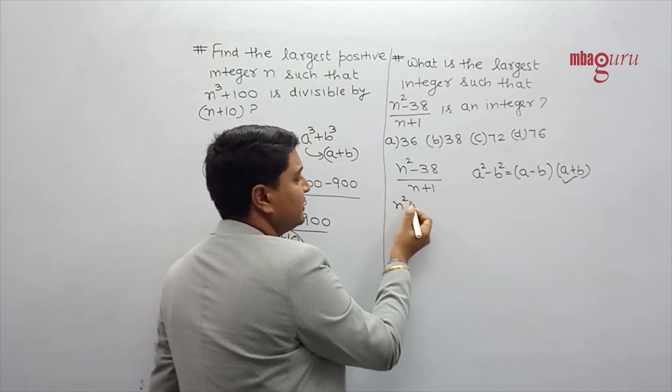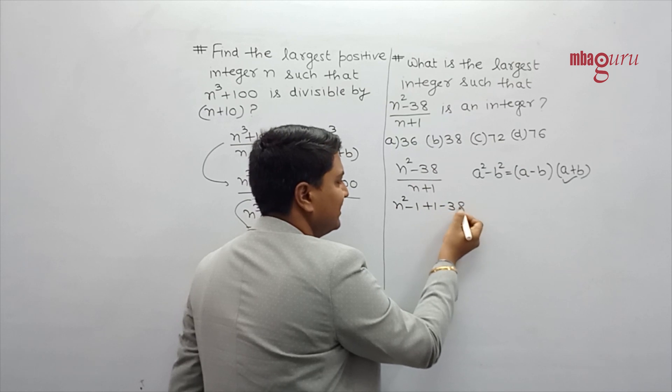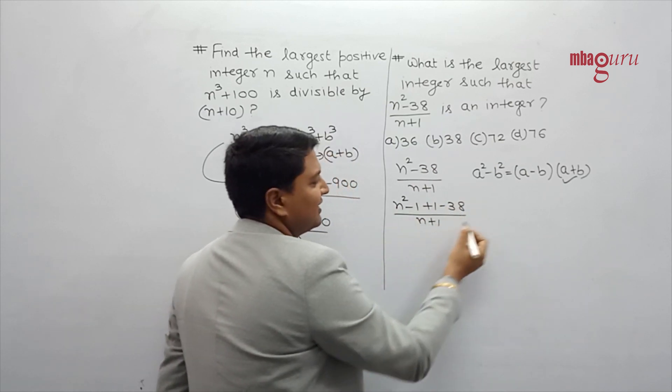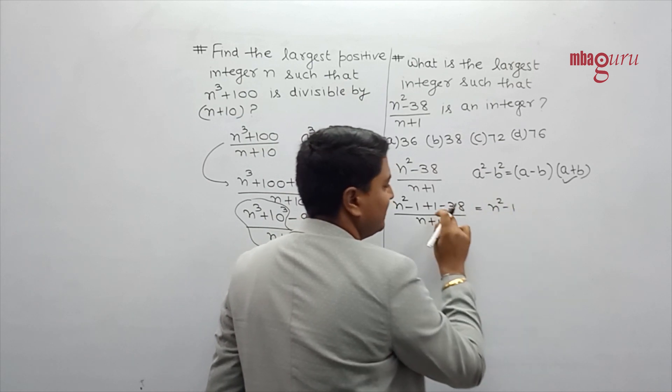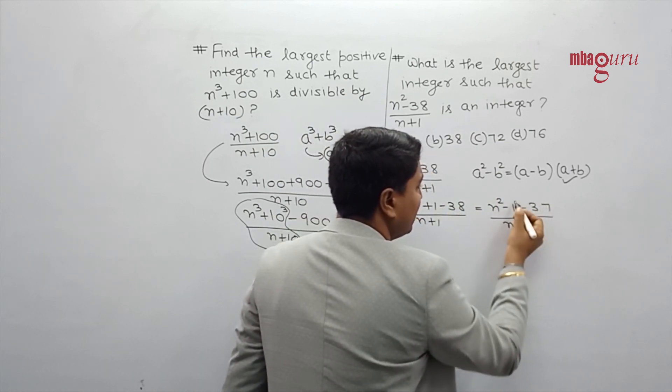So can I write n square minus 1? So if you find a form of a square is a plus b, then there is a form of a square minus b. So you can write, if you do a form of a square, it is a plus b.